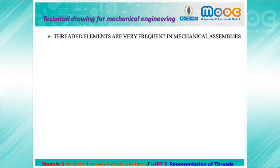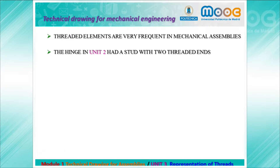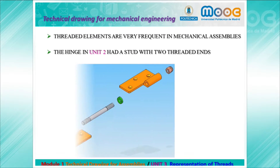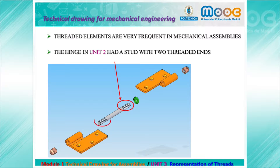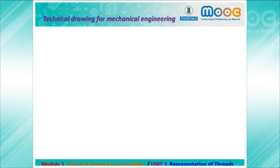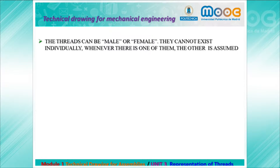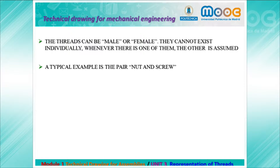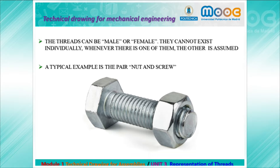Threaded elements are frequent in our mechanical assemblies. The hinge in Unit 2 had a stud with two threaded ends. Threads can be male or female — they cannot exist individually. Whenever there is one of them, the other is assumed. A typical example is the pair nut and screw, as you can see in this image.